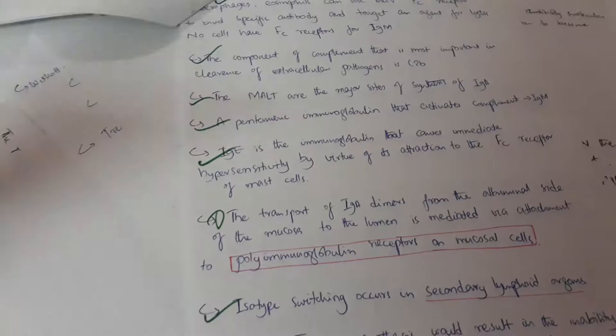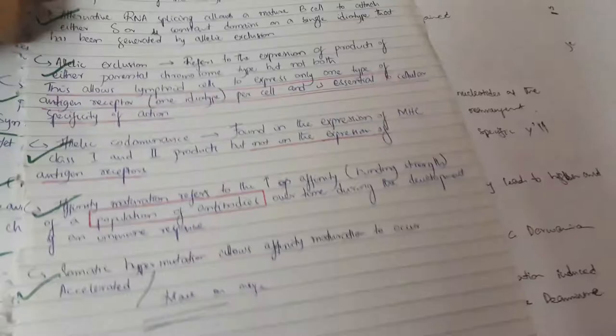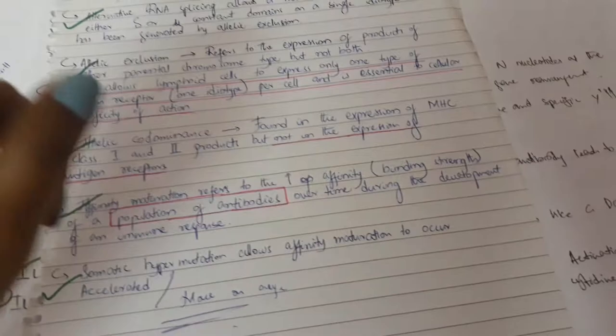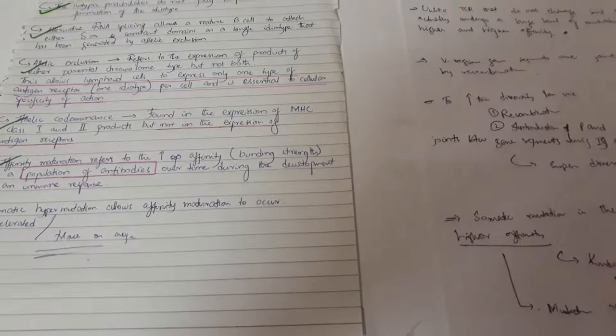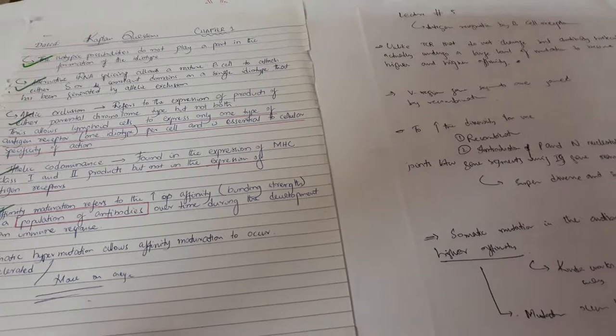These are all the questions that I've solved from Kaplan and the BRS. I think there is a BRS book specifically for autoimmune disorders. So this is how I studied immunology, and I hope this video was helpful. If it was, then please like, comment, share, subscribe to the channel, and let me know other videos that you want to watch. I'll probably cover microbiology in the next one. See you then!